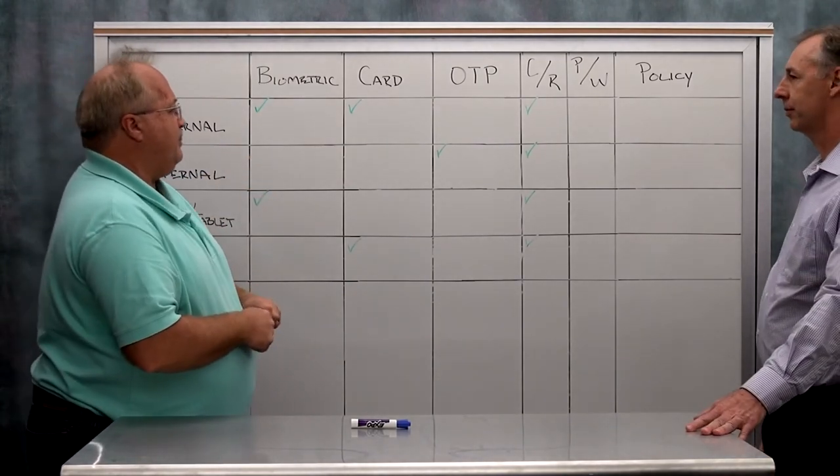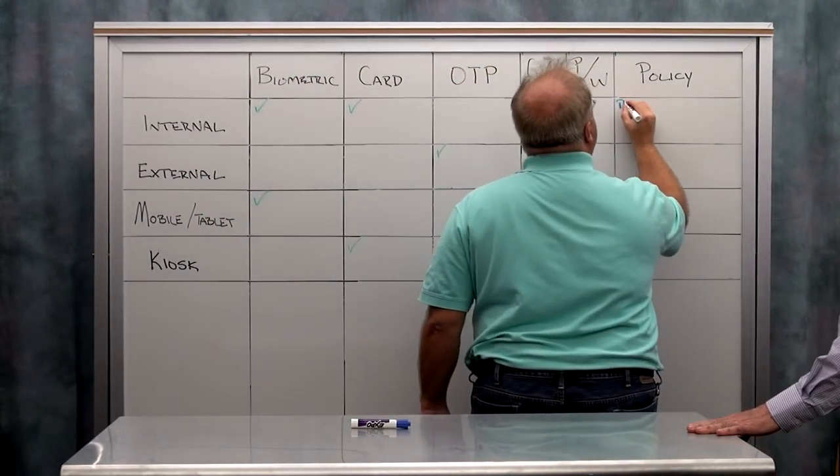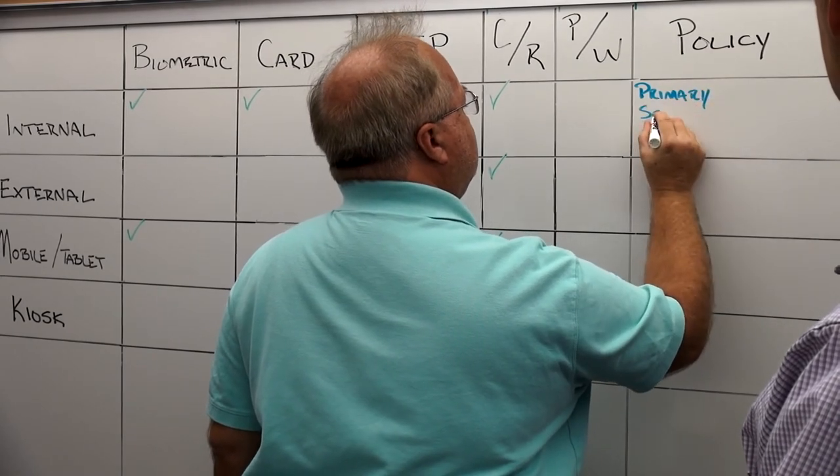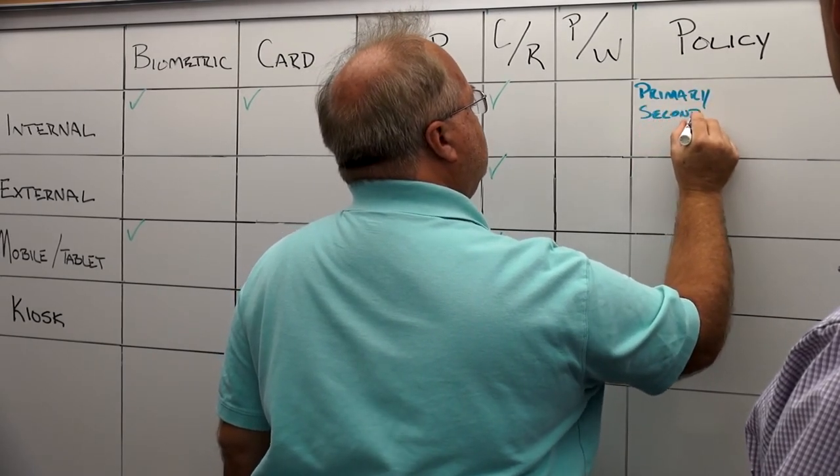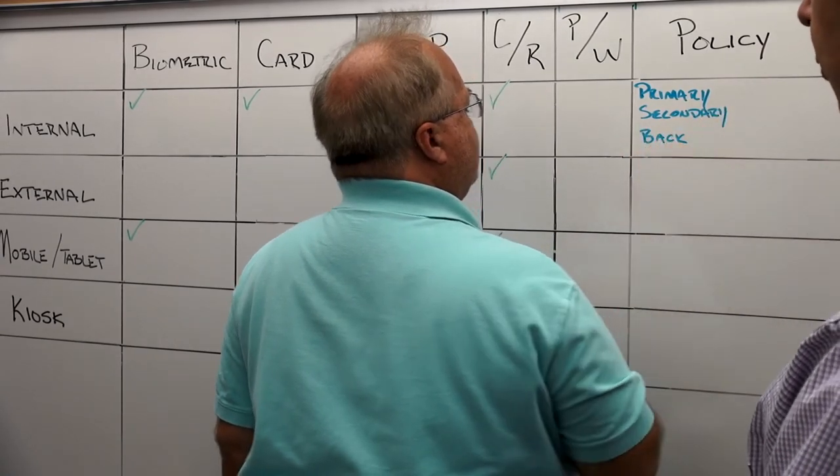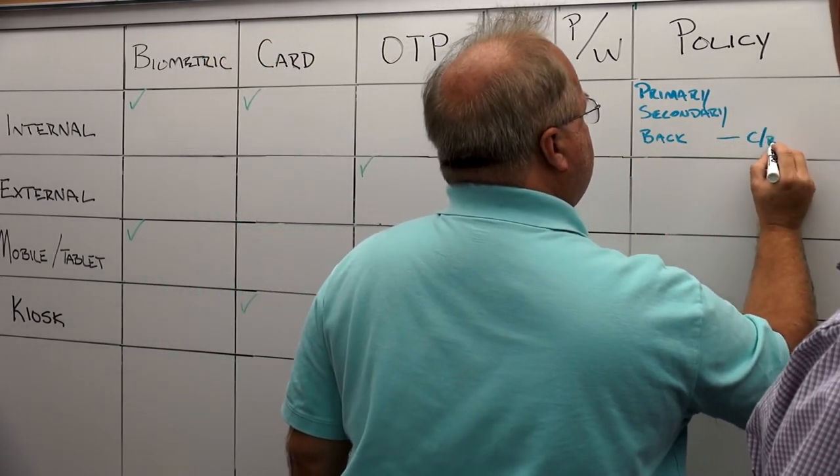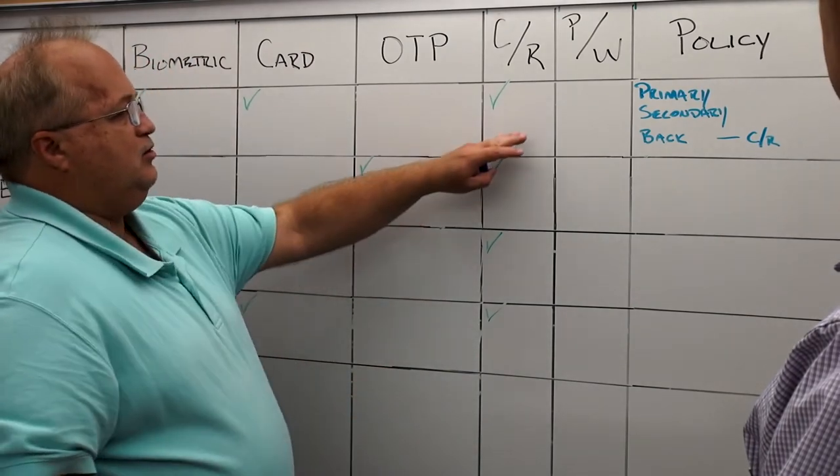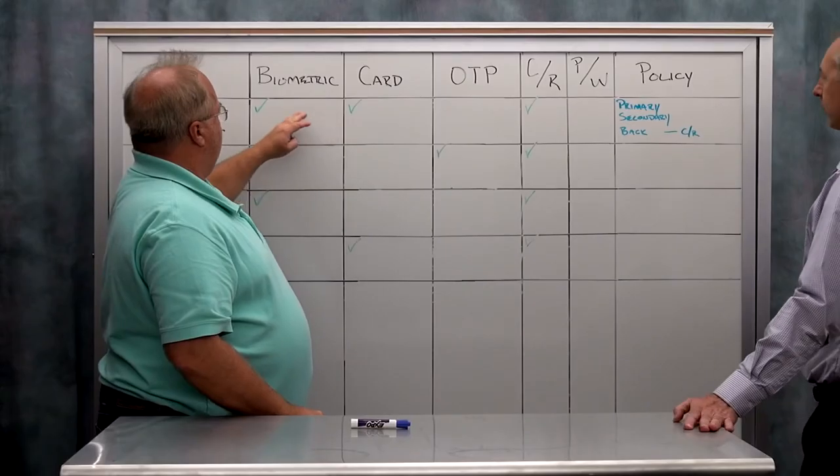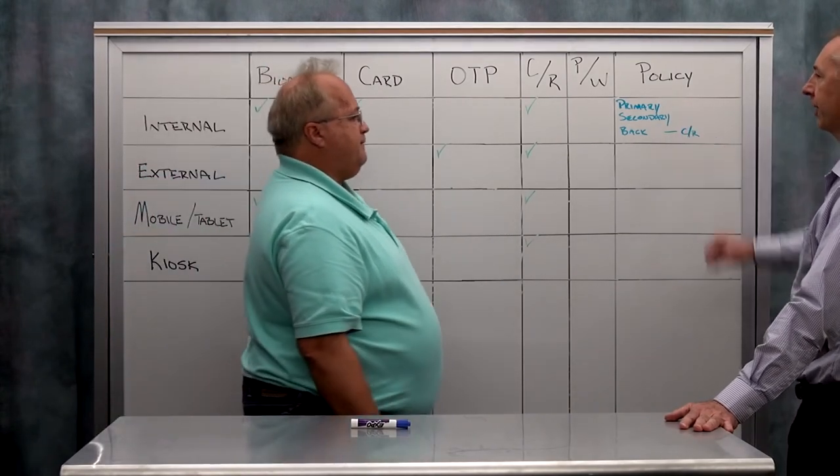So this last column, you're going to want to have a very simple primary, secondary, and backup. And the backup is going to be what? The backup is going to be the challenge response. So that's when a user doesn't have their card with them. And this weekend, they burnt their hand. So the difference between a primary and a secondary is going to be what?